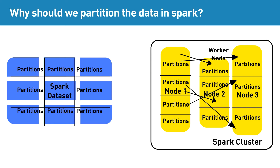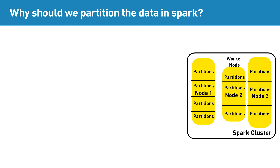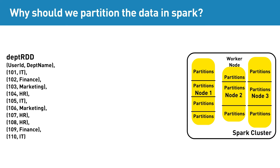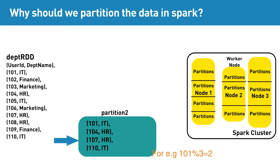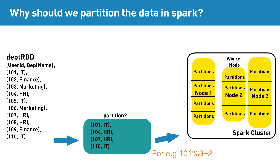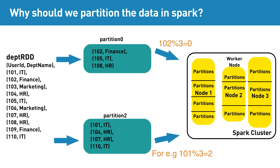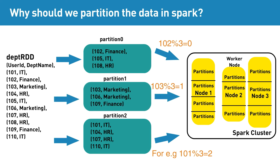Now if we partition the datasets into three partitions by taking Modulo 3, then the records in the dataset are equally split and stored into appropriate partitions in different nodes of the cluster. For example, if we partition the DepartmentRDD into three partitions by taking Modulo 3 on the key UserID, then UserID 101 will be put into partition 101%3 = 0, the zero partition. The UserID 103 will be put into 103%3 = 1, the first partition, and so on.